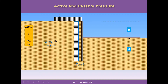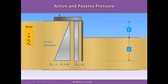In terms of active pressure, the first pressure we find is produced by Q, the load. The diagram for this load is a constant rectangular diagram with a base equal to Ka times Q. The self-weight of the soil to the left side of the wall produces a pressure with a linear distribution, starting with zero at the ground surface and increasing to a base value of Ka times gamma times (H plus D) at the bottom of the wall, giving a triangular diagram.